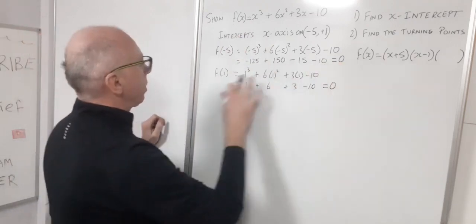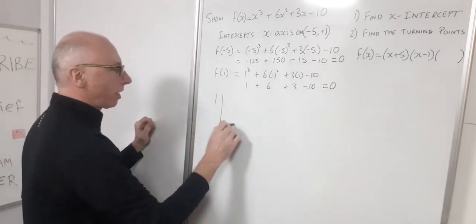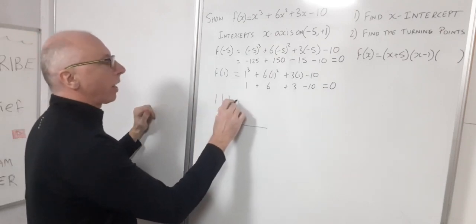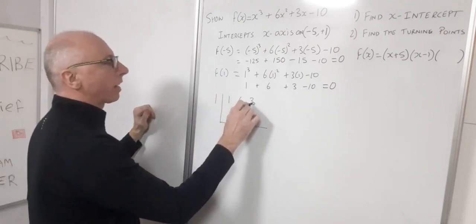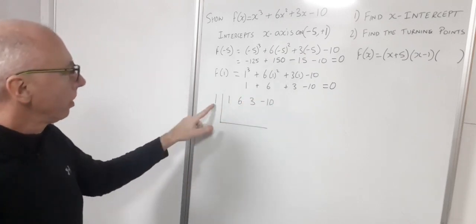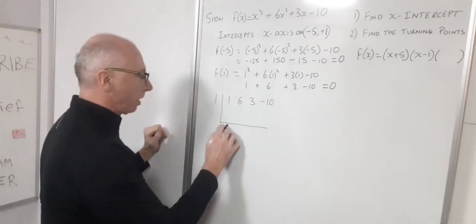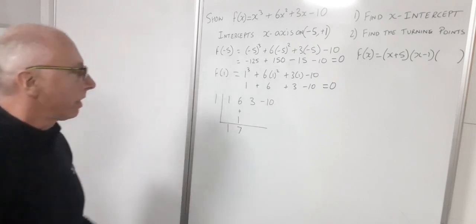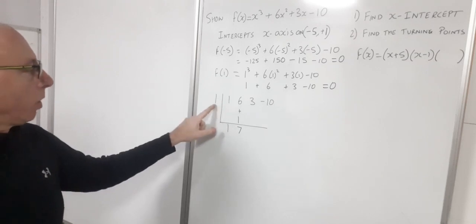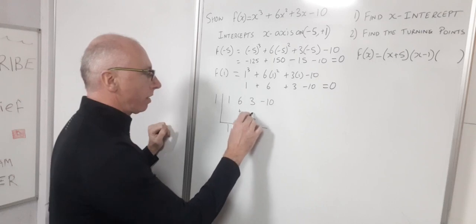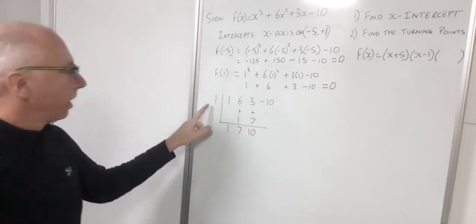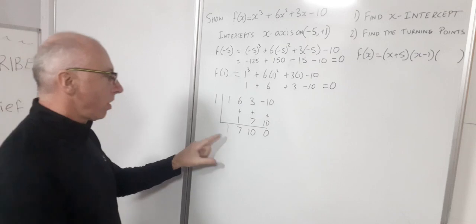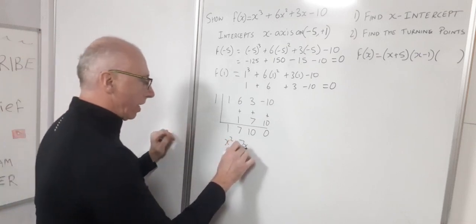We know that 1 is a solution. So using synthetic long division, I take my coefficients of my function: 1x cubed, 6x squared, plus 3x and minus 10. I just bring this 1 down to the bottom. Then I do 1 times 1 is 1, add them together to give me 7. Then 1 times 7 is 7 — add these together to give me 10. Now 1 times 10 is 10, add them together, that gives me 0. So now I've got x squared plus 7x plus 10.